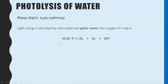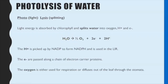The word equation for photolysis shows the water molecule being split into oxygen, electrons, and protons. The protons, which are hydrogen ions, are picked up by NADP, which is a coenzyme, and that is how we get the reduced NADP or NADPH being formed — which is needed in the light independent reaction. The electrons are passed along a chain of protein carriers and they release energy. The oxygen is not used in photosynthesis, so it is technically a waste product, though it could be used in respiration or diffuse out of the leaf through the stomata.